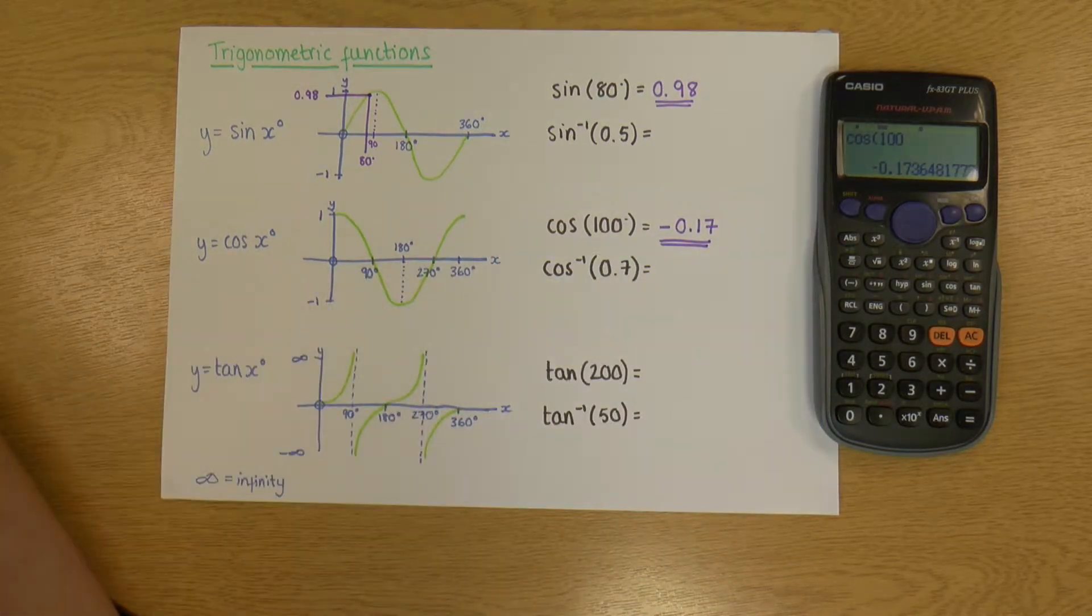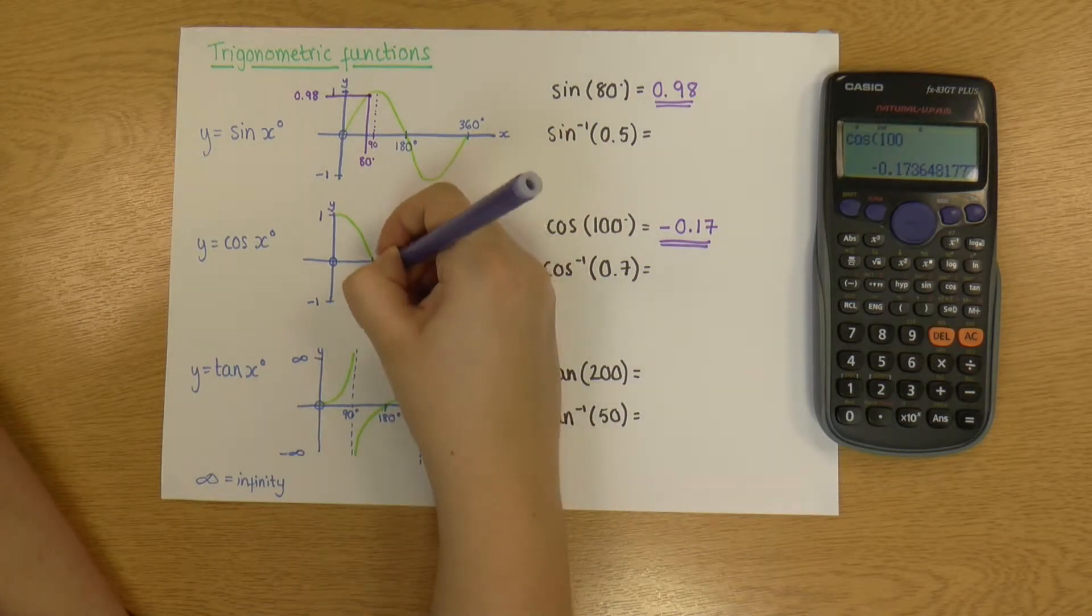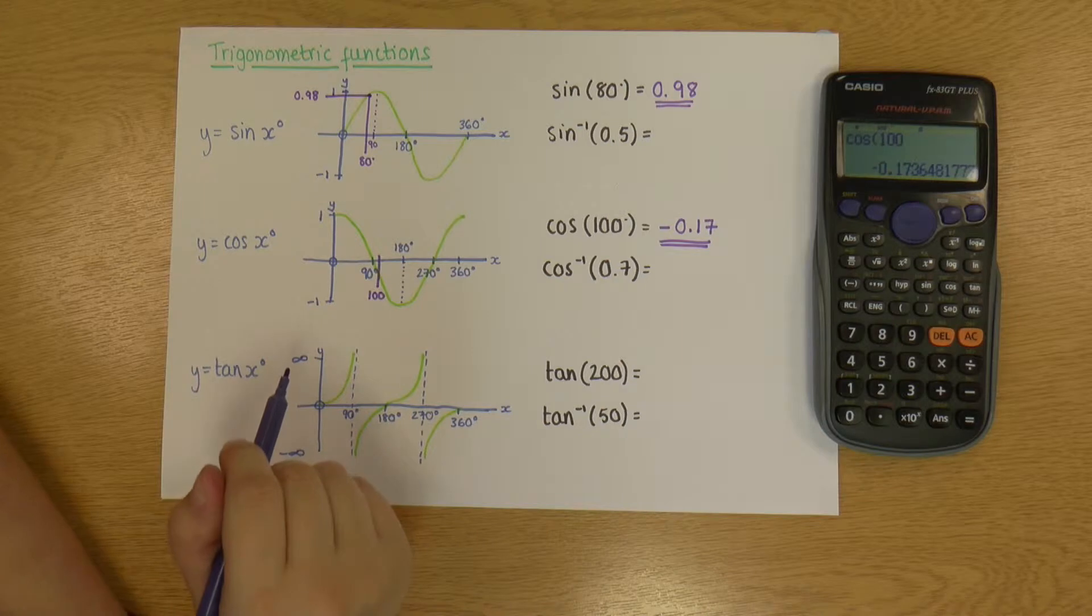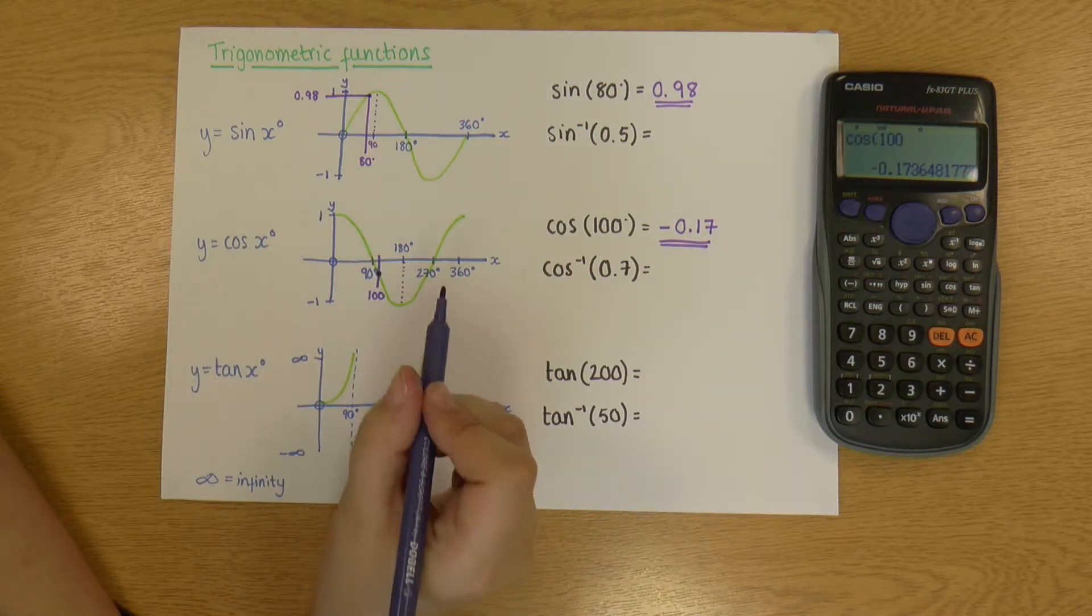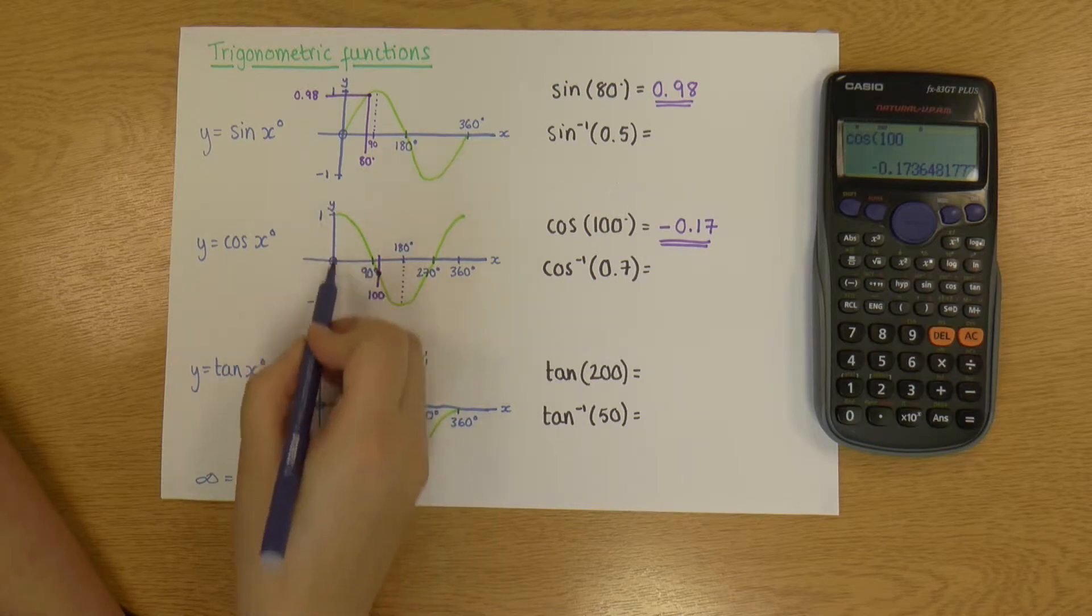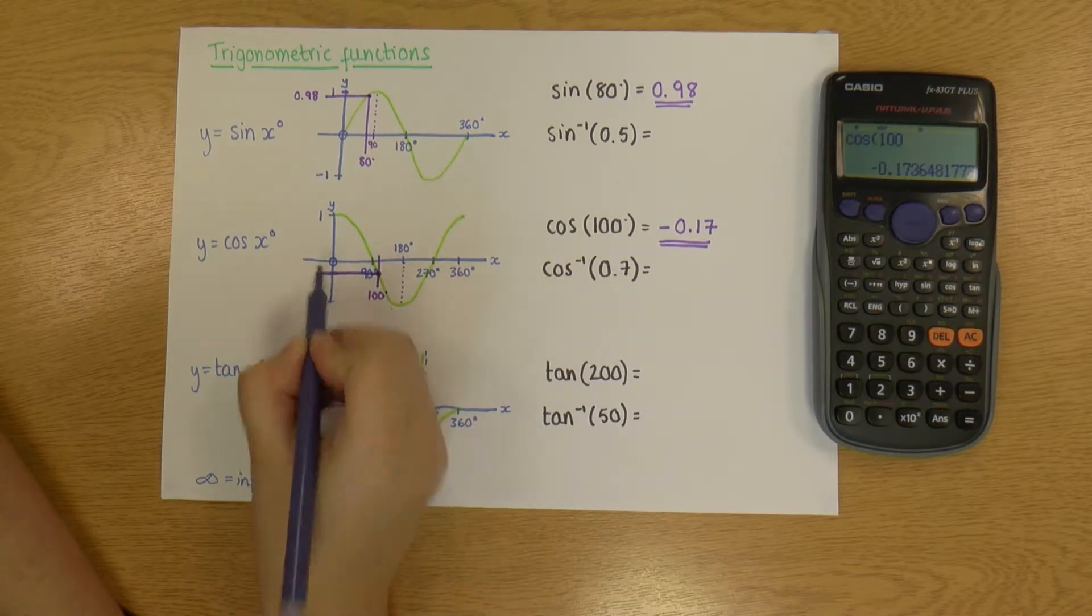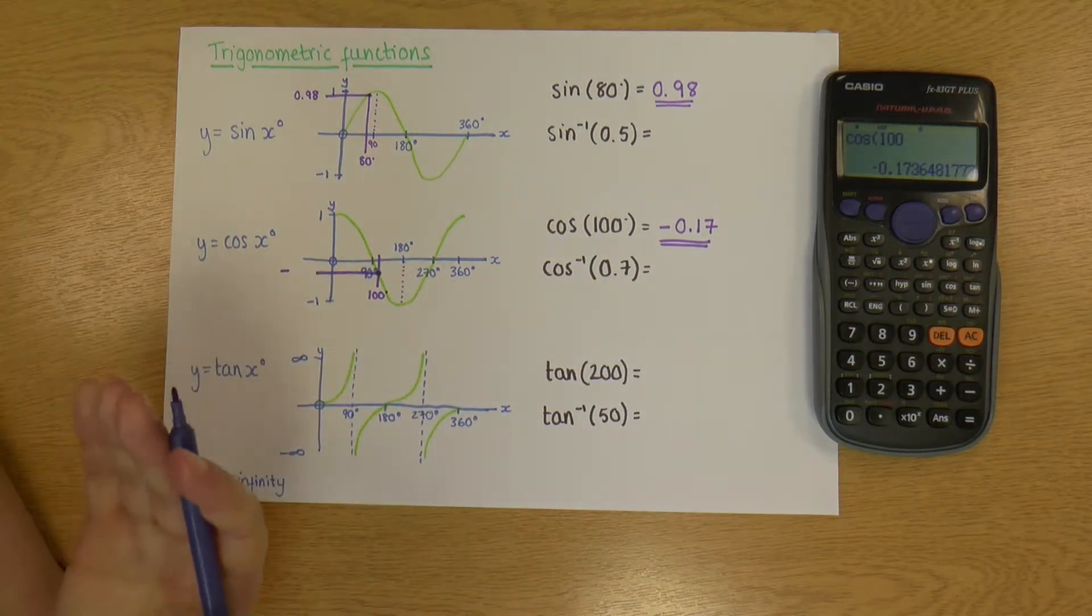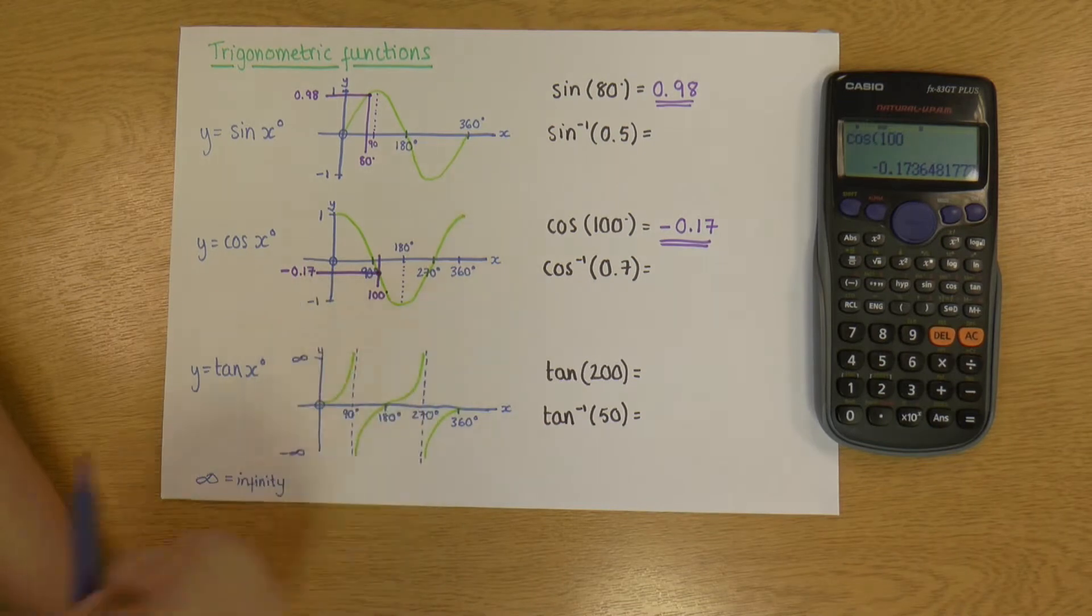So let's look at it in terms of this graph. So I'm finding my degrees along the x-axis. So 100 is about there. And it crosses the cos curve there. So it's asking, what is the value on the y-axis when the cos curve is at 100 degrees? So I'm going to draw my line across to there. And because it's below zero, it's in this negative section that goes down to negative one, it makes sense that it's a minus number. So that is at minus 0.17.